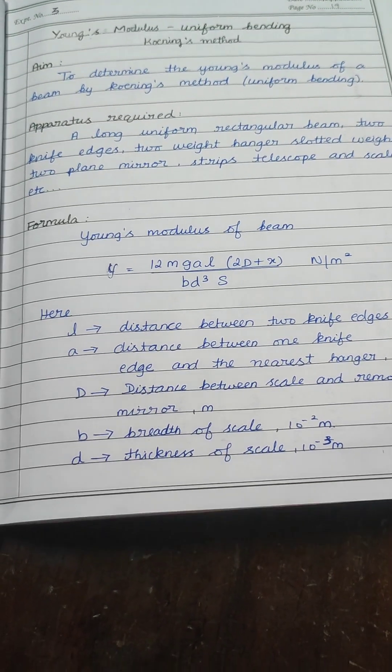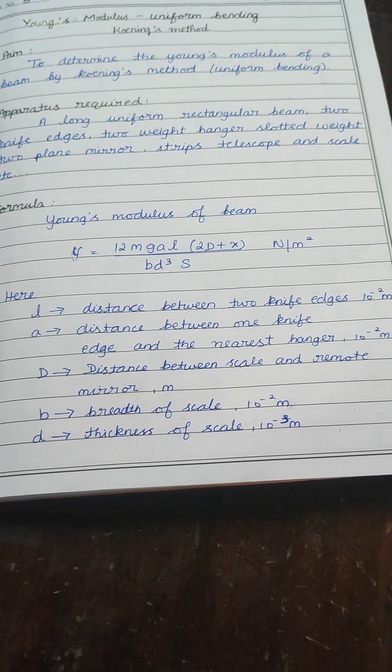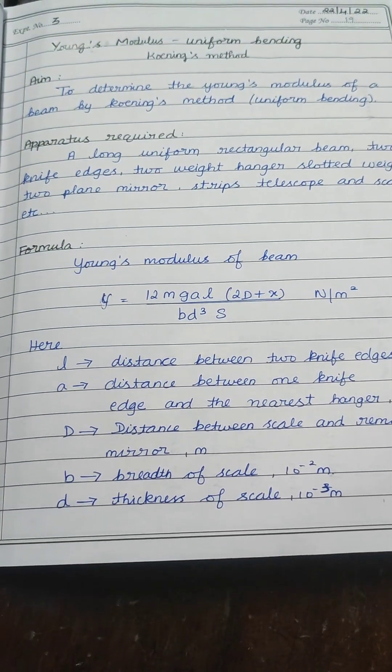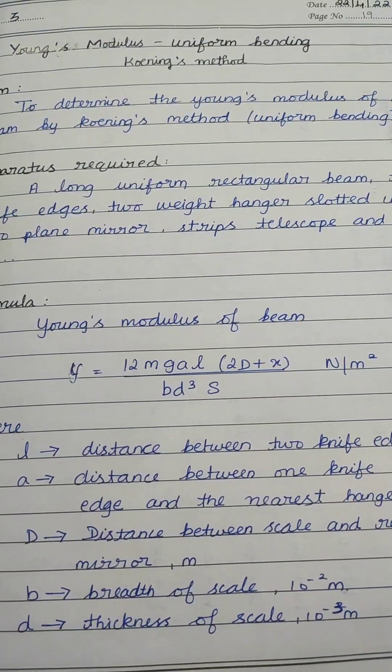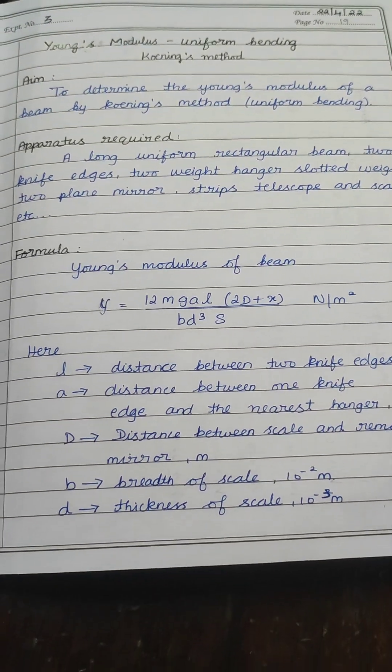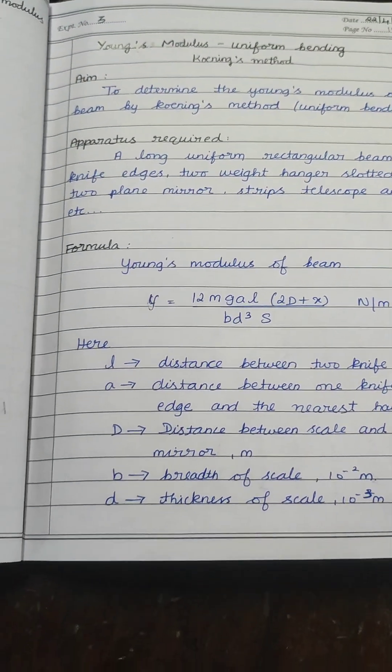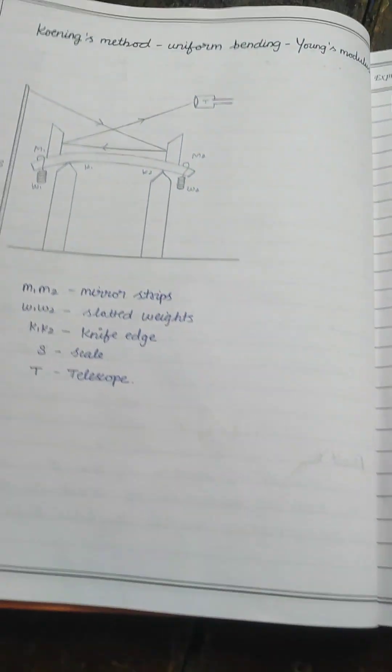Actually, l is the distance between two knife edges, a is the distance between one knife edge and the nearest mirror, d is the distance between the scale and the remote mirror, b is the breadth of the scale, and d is the thickness of the scale. These we have to measure from the arrangements.